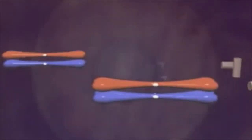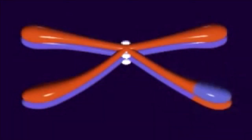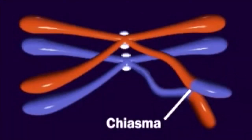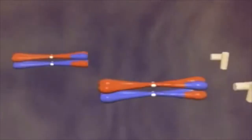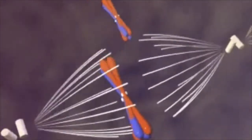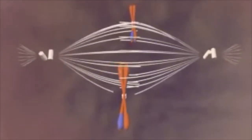This diploid nucleus has two pairs of homologous chromosomes. During prophase I, there's a genetic crossover within the chromosomes. Metaphase begins as pairs of chromosomes pair together.